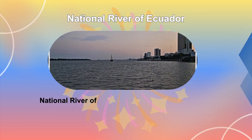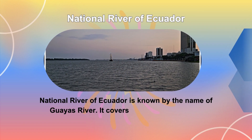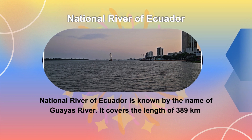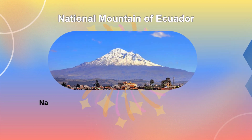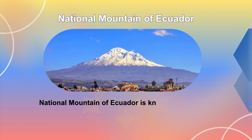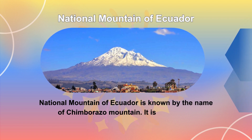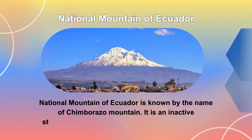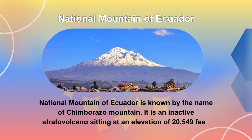The National River of Ecuador is known as the Guayas River, covering a length of 389 kilometers. The National Mountain of Ecuador is Chimborazo Mountain, an inactive stratovolcano sitting at an elevation of 20,549 feet.